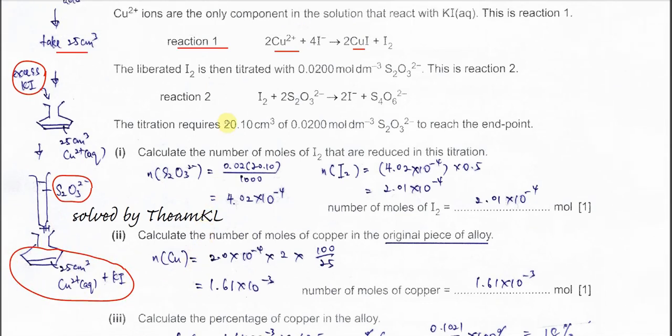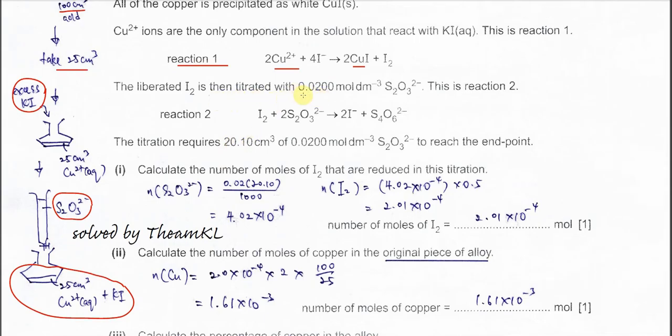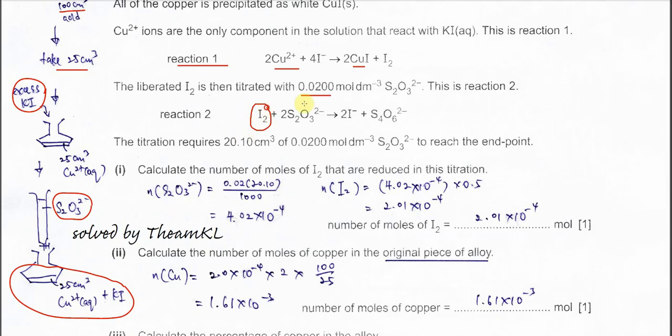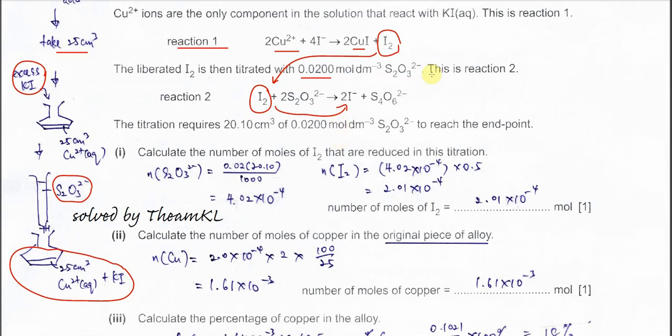Now the iodine that released, that formed, will titrate with thiosulfate. This titration, the iodine is titrated with 0.02 mol per dm³ thiosulfate. This is reaction 2. The iodine that forms will react with thiosulfate. The iodine reduces back to iodide. After that we will know the volume of thiosulfate used. When all the iodine has reacted with thiosulfate, at endpoint the brown color disappears. Normally for this titration we use starch. When the blue-black disappears, we know the iodine has finished reacting.